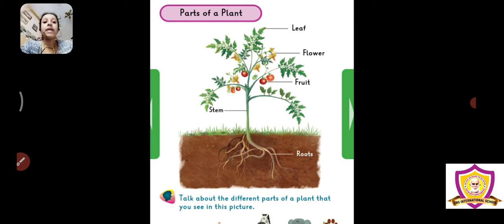Plant ko khaare rene ke lei, it would require a strong root. Only if it has a strong root, the plant can stand in the ground. So, what is the property of the root? The root holds the plant in the ground.